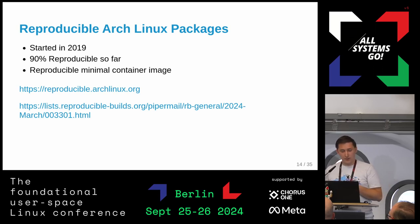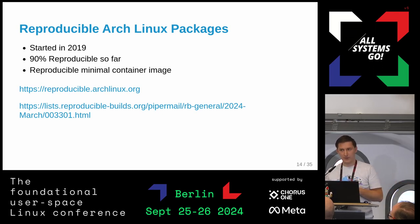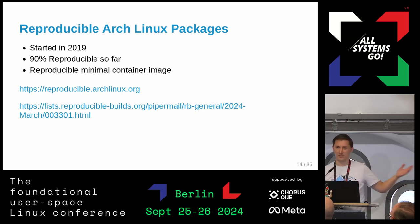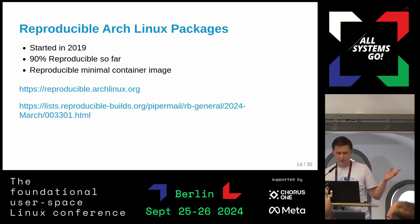We've been doing reproducible builds for packages since 2018 or so. We've joined some summits, and we have an environment where we take repository packages, rebuild them again, compare the hashes, and we are 90% reproducible. The remaining 10% is the hardest stuff — it requires things like Haskell to become reproducible. Interestingly, our container image packages are fully reproducible, achieved in March this year — though that doesn't say anything about the container image itself.